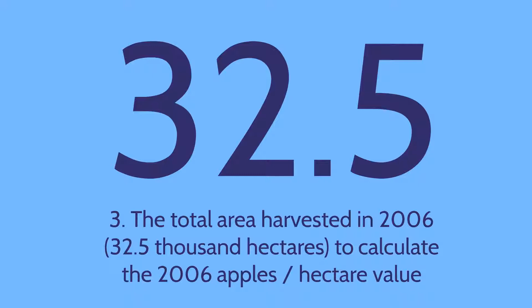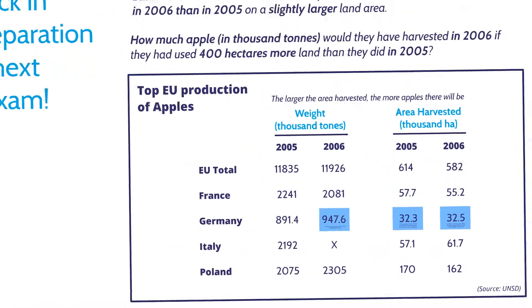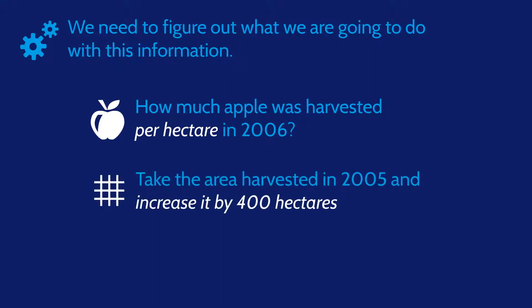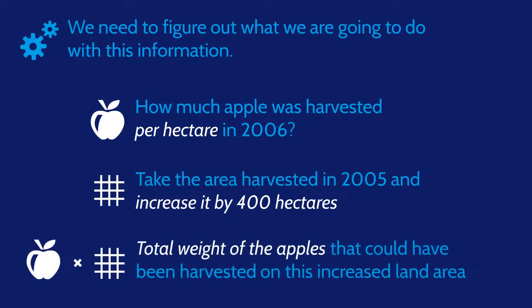Next, we need to figure out what we're going to do with this information. First, we're going to figure out how much apple was harvested per hectare in 2006. Once we have that, we can take the area harvested in 2005 and increase it by 400 hectares, as instructed in the question text. As a last step, we will calculate the total weight of the apples that could have been harvested on this increased land area.